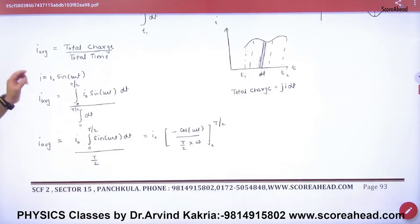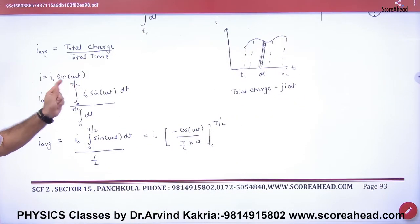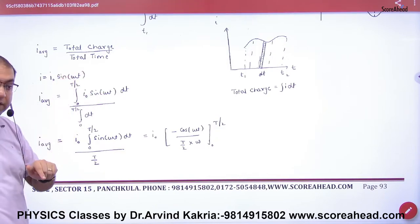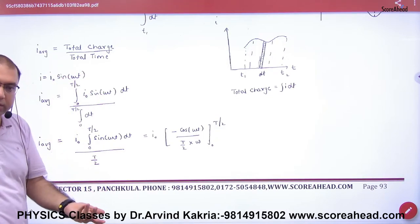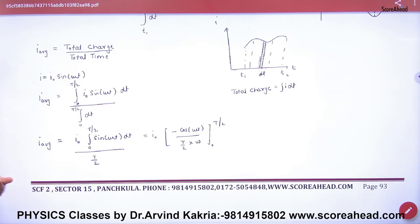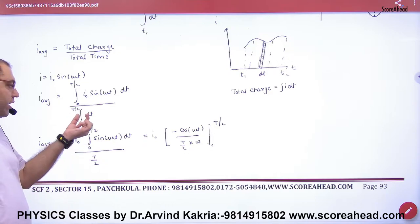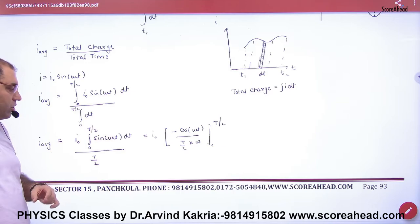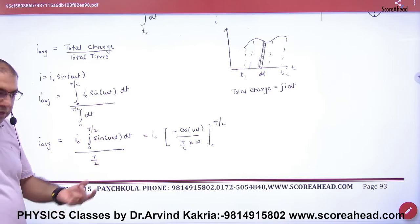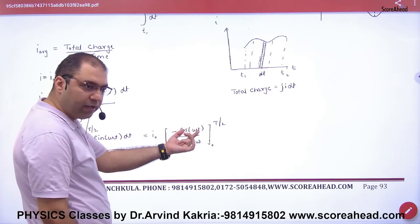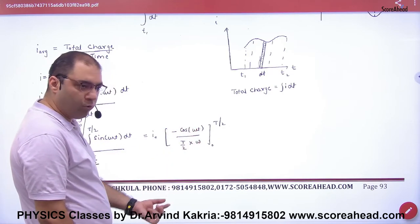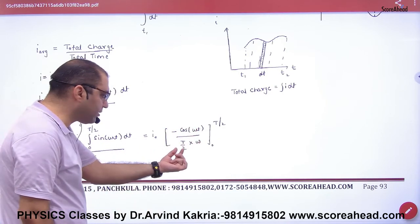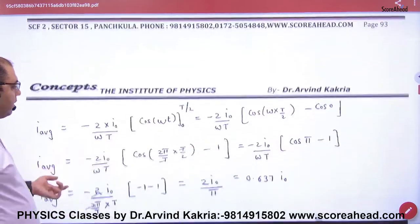Half cycle, what will happen? The limit that you put: zero to T by two. So you can check here, the limit here is zero to T by two. And sine of zero is zero, so zero from zero to T by two. So the integration of this, you will have to integrate from zero to T by two.